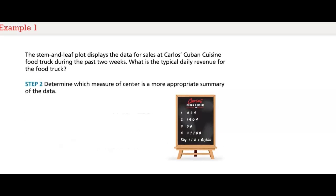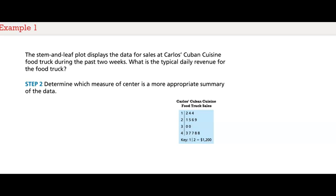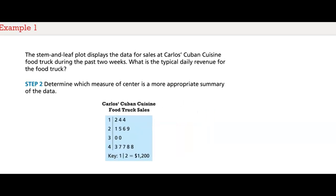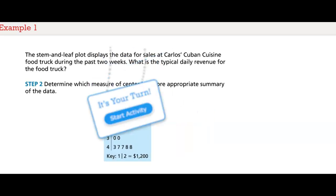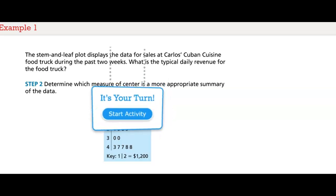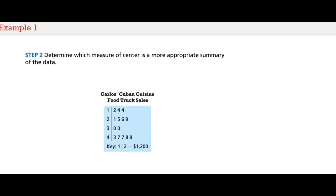Step 2. Determine which measure of center is a more appropriate summary of the data. Since there are no outliers and the data are clustered together, use the mean to answer the question.